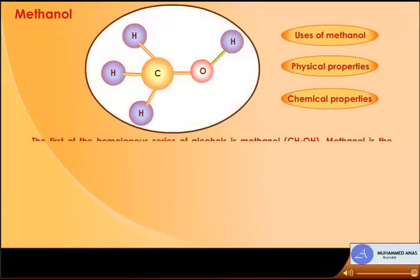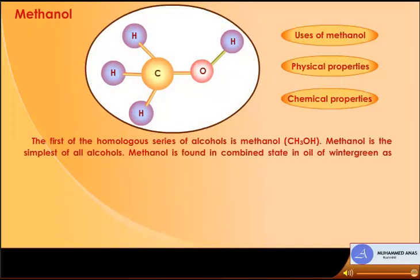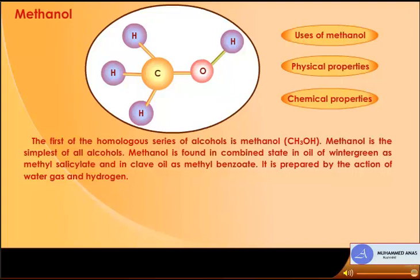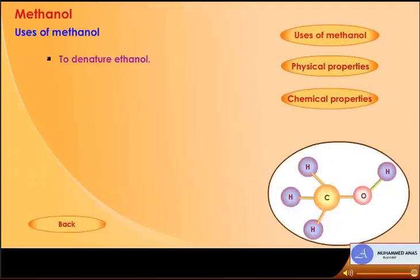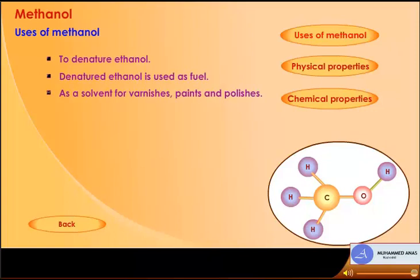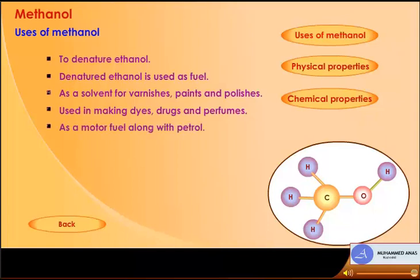Methanol is the first member of the homologous series of alcohols, formula CH3OH. It is the simplest of all alcohols. Methanol is found in combined state in oil of wintergreen as methyl salicylate and in clove oil as methyl benzoate. It is prepared by the action of water gas and hydrogen. Traditionally, methanol was made from destructive distillation of wood and was known as wood alcohol, or methyl alcohol. Uses of methanol: to denature ethanol; as fuel; as a solvent for varnishes, paints and polishes; in making dyes, drugs and perfumes; as a motor fuel along with petrol; and for making formaldehyde.